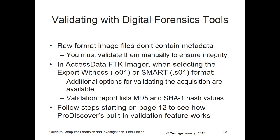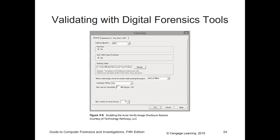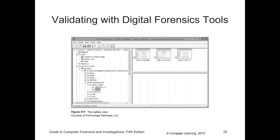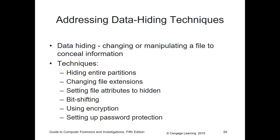Raw format images don't contain metadata, so you must validate them manually to verify integrity. AccessData's FTK Imager, when selecting the Expert Witness format — the E01 or S01 formats — has built-in validation features where you double-check and verify hash values. You just have to make sure that you're doing them. Here is the preference for the auto-verify image checksum feature, and here again is the ProDiscovery basic structure.